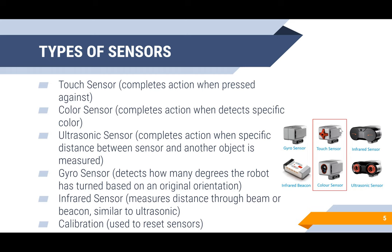In FLL, you can use and code a large range of sensors, which are these cool looking things in the picture on the right. They basically detect motion or a specific thing around the robot, instead of coding a specific aspect of the robot like a motor does.